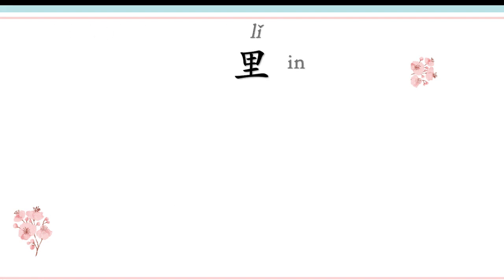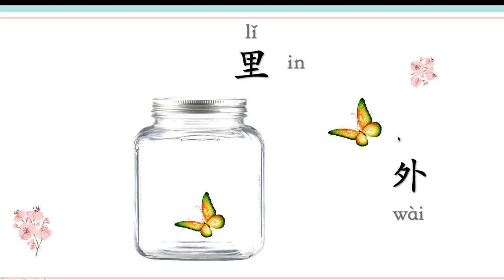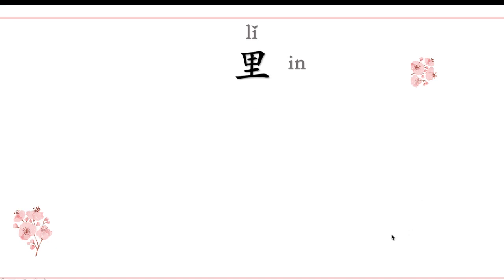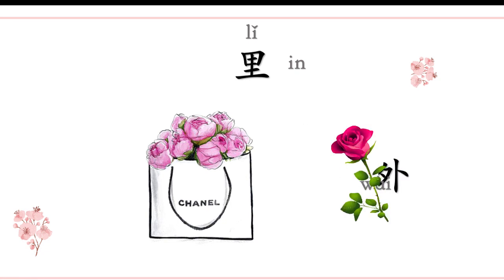Now, 里 means 'inside' and 外 means 'outside.' For example: a butterfly inside a bottle is 里; butterfly outside the bottle is 外. In English we say 'in the classroom,' but in Chinese we place the location first: 教室里, 宿舍里, 食堂里. So the rule is: place + 里, which equals 'in somewhere' in English.